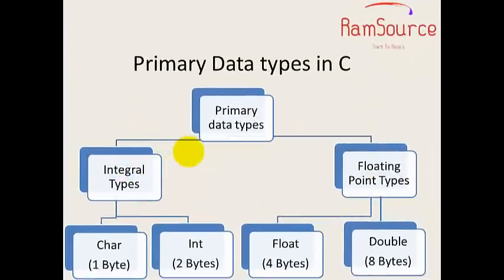Primary data types in C: Integral types include character and integer. Floating point types include float and double.